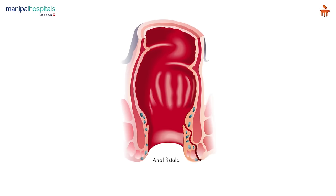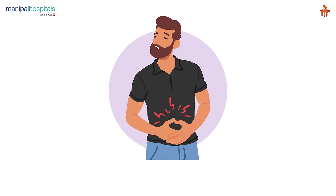Coming to fistula: a fistula is a tube-like track where most patients have an external opening near the anal canal and one internal opening inside the anal canal. Patients most often present with pus discharge near the anal canal, and when the pus forms they experience discomfort and pain — this is how fistula-in-ano is diagnosed.